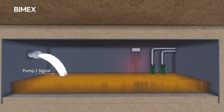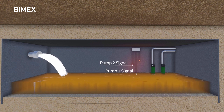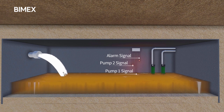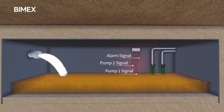The first level switch triggers the first pump and the second level switch triggers the second pump. The third level switch sends out a high level alarm signal. The purpose of this large equalization tank is to collect the sewage that flows by gravity from the communities.